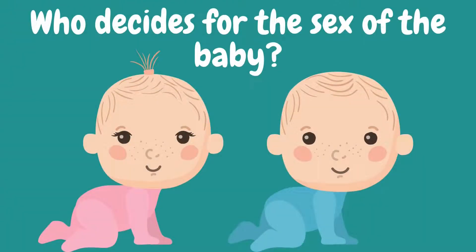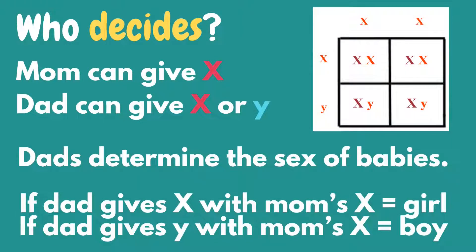But who decides for the sex of the baby? Females inherit an X chromosome from the father for an XX genotype, while males inherit a Y chromosome from the father for an XY genotype. Remember that mothers only pass on X chromosomes. Therefore, it's the male who decides for the sex of the offspring.